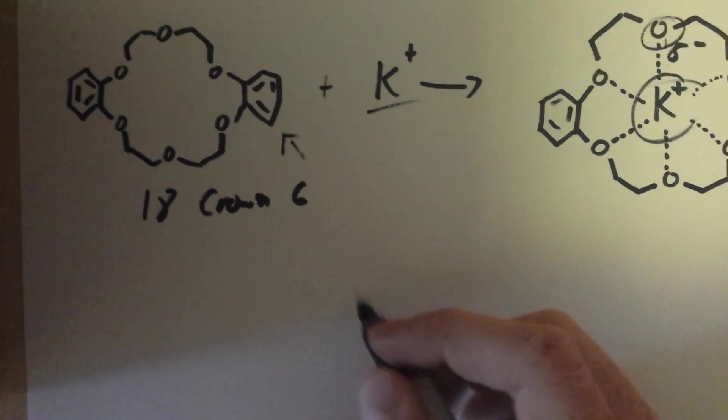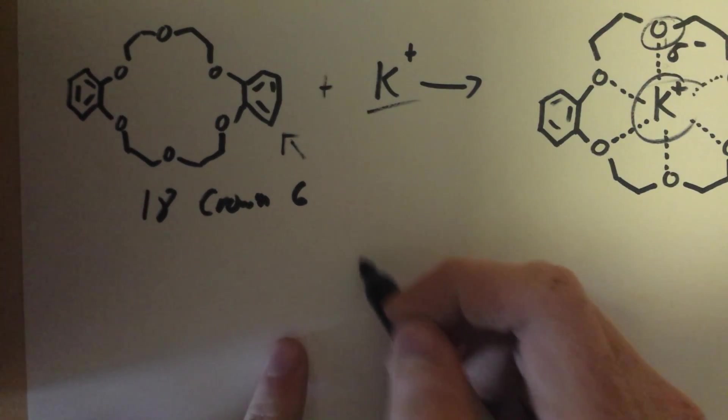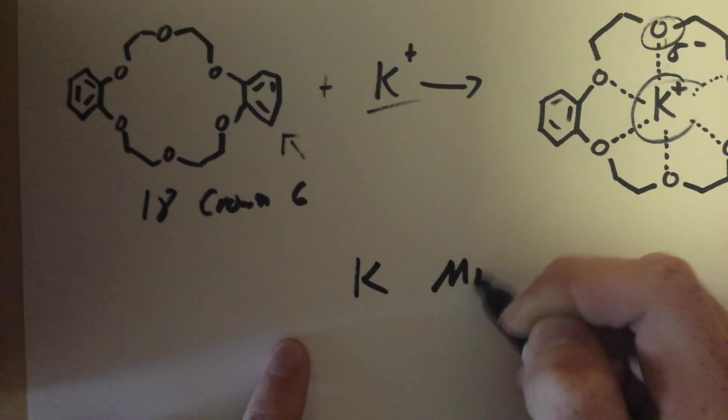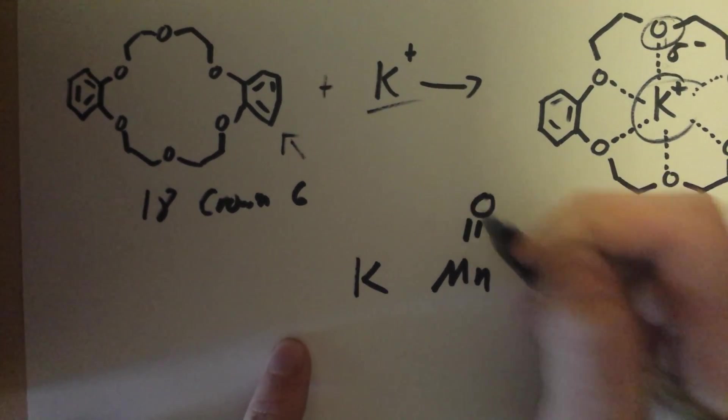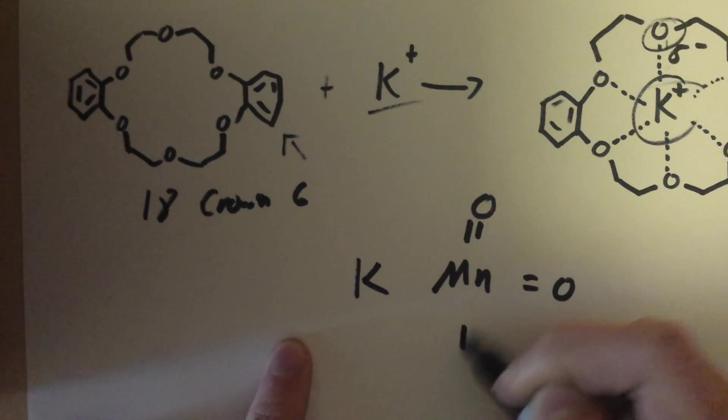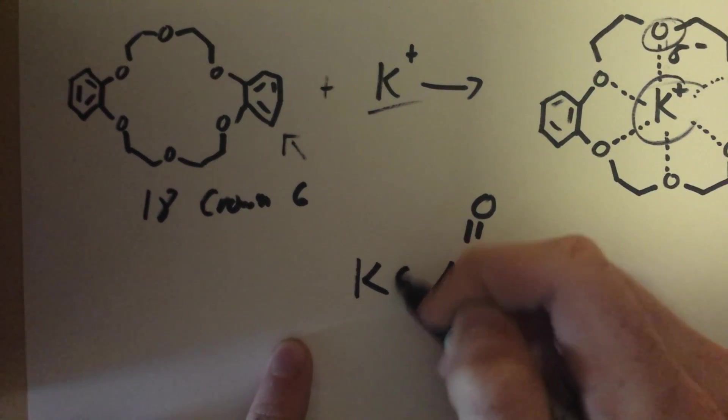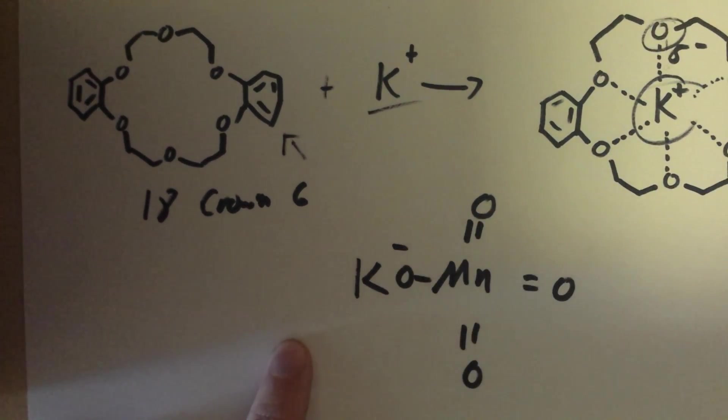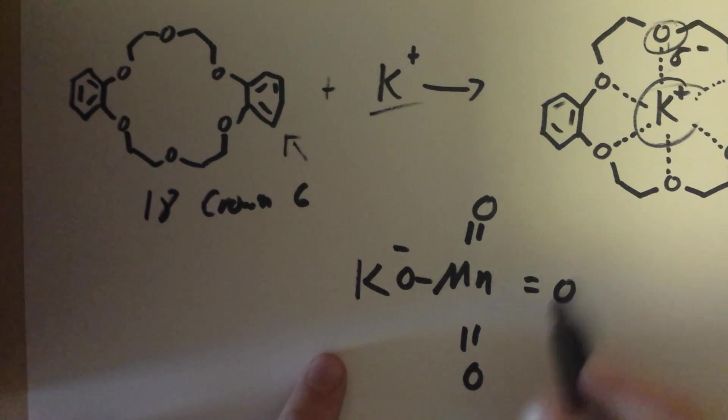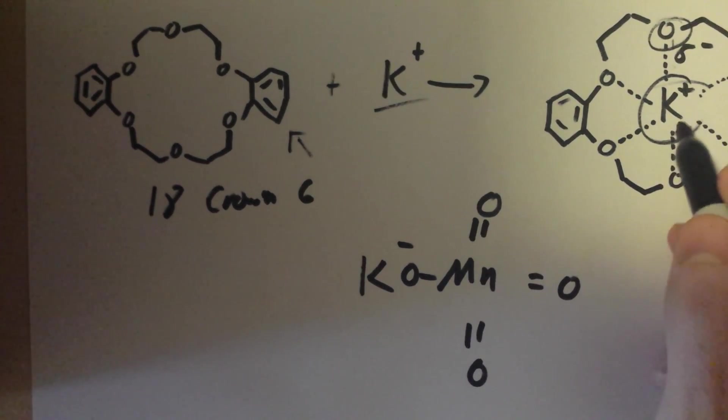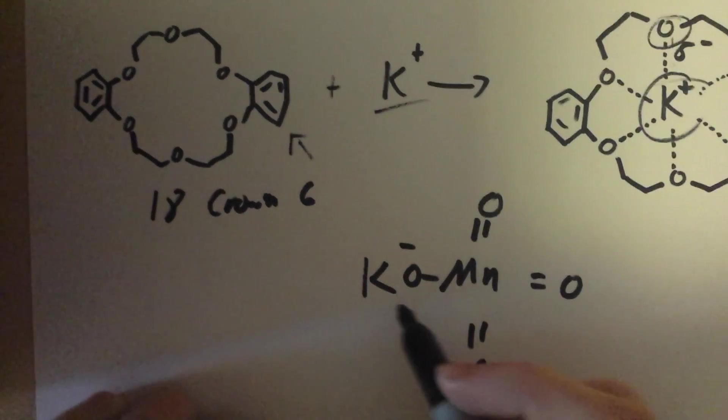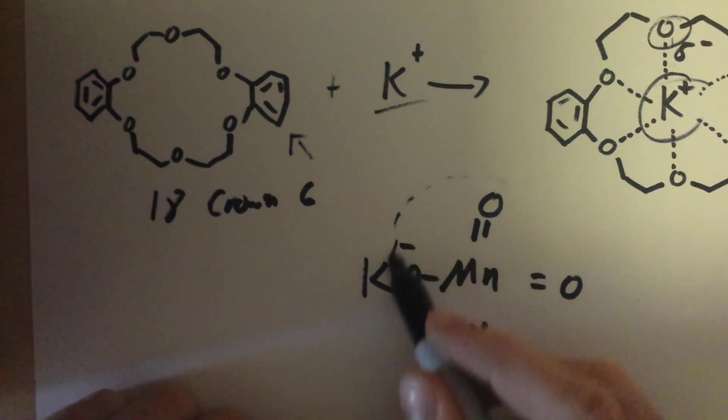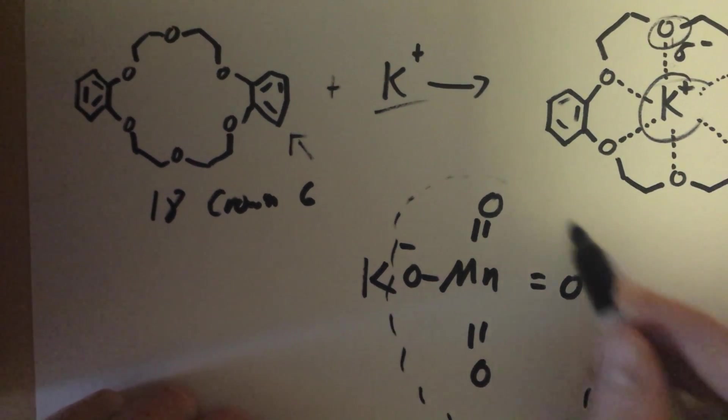In the case of potassium permanganate, potassium permanganate is KMnO4. This has a partial negative right there, and when the potassium ion gets bound to the crown ether, it drags this permanganate with it.